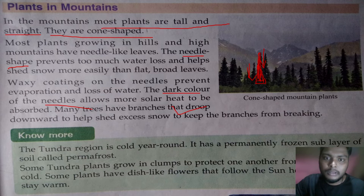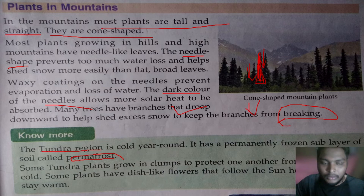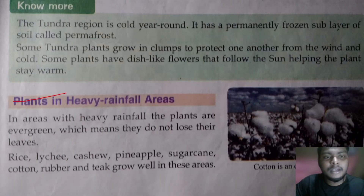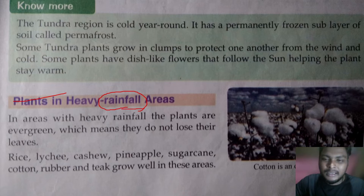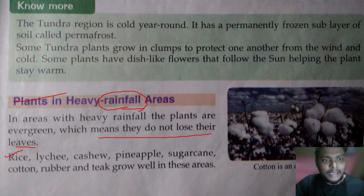Mountain plants are also adapted to keep their branches from breaking under snow. In the tundra region, snow is present throughout the year and very few plants grow there. In areas with heavy rainfall, there are evergreen forests where plants receive rainwater throughout the year and do not shed their leaves in autumn. Plants like rice, lychee, cashew, pineapple, sugarcane, rubber, and cotton grow in these areas.